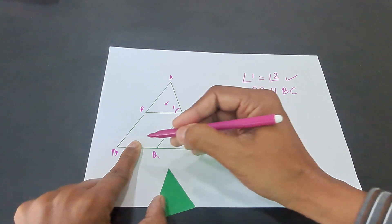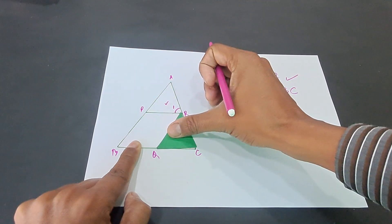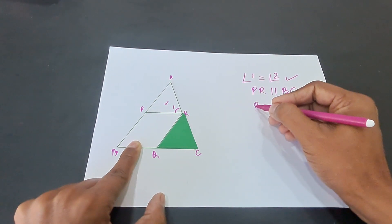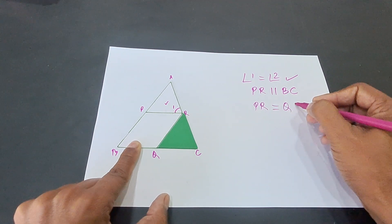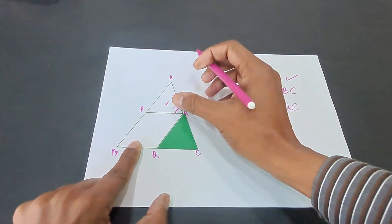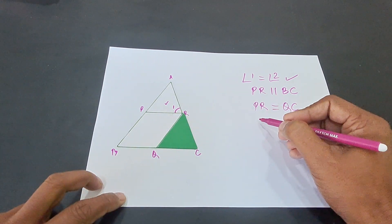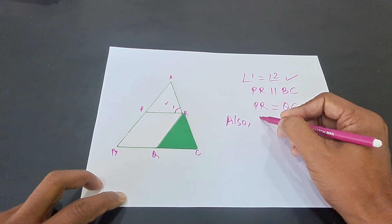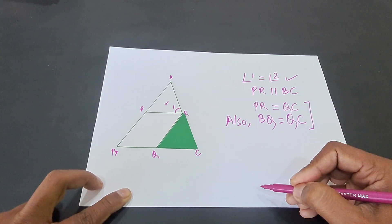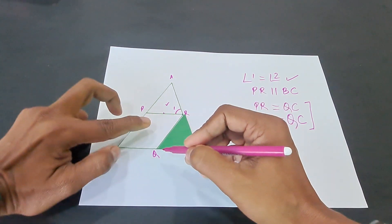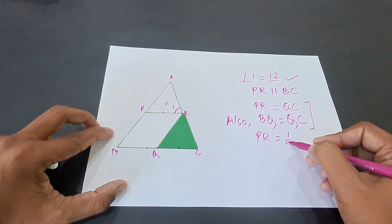Now I want to prove that PR is half of BC. You can see that the side PR is equal to the side QC — also using CPCT, that is corresponding parts of congruent triangles. So PR equals QC by CPCT. But you also know that QC and BQ are equal, because Q is the midpoint of BC. So BQ equals QC. Therefore, all three sides PR, BQ, and QC are equal, which means PR is half of BC.